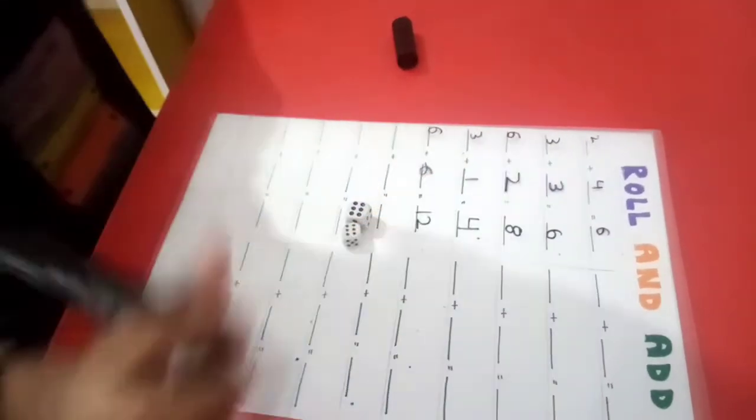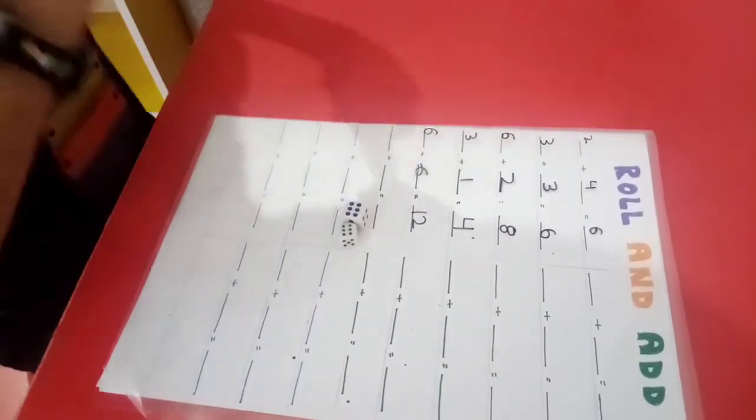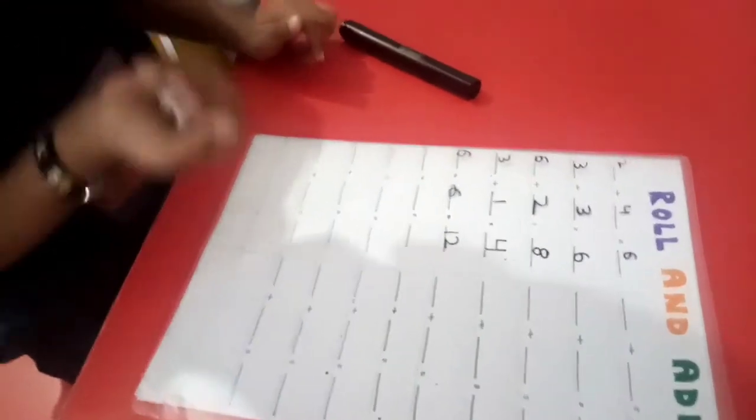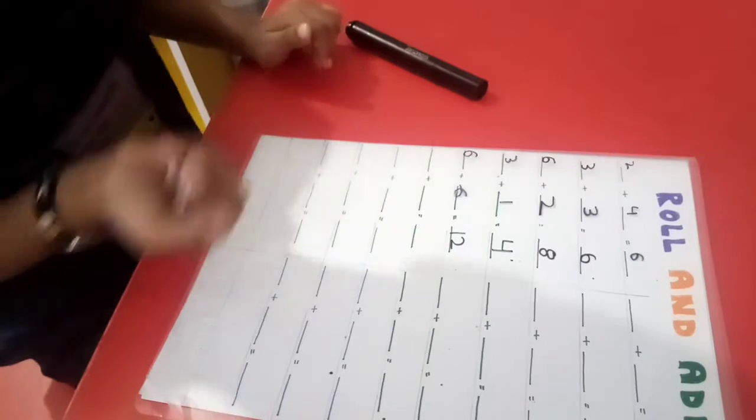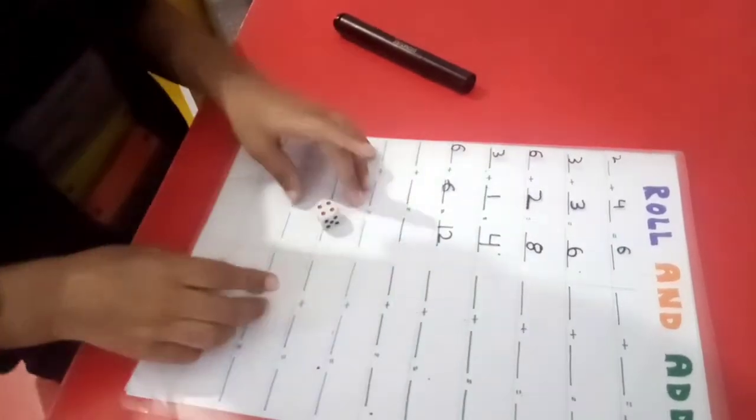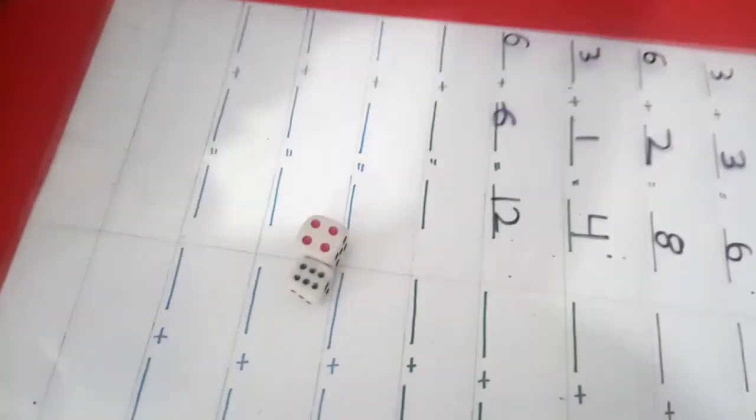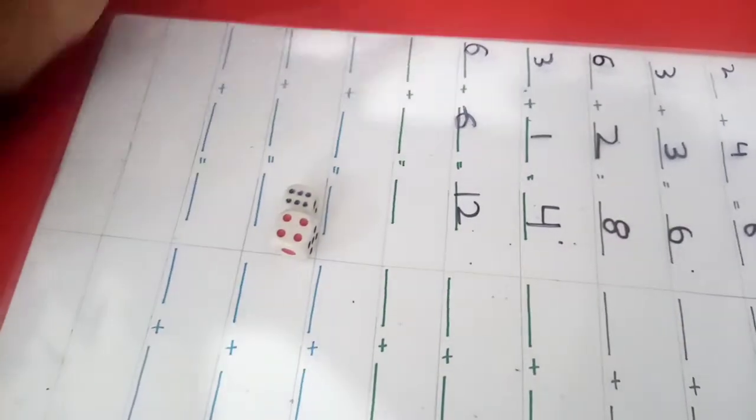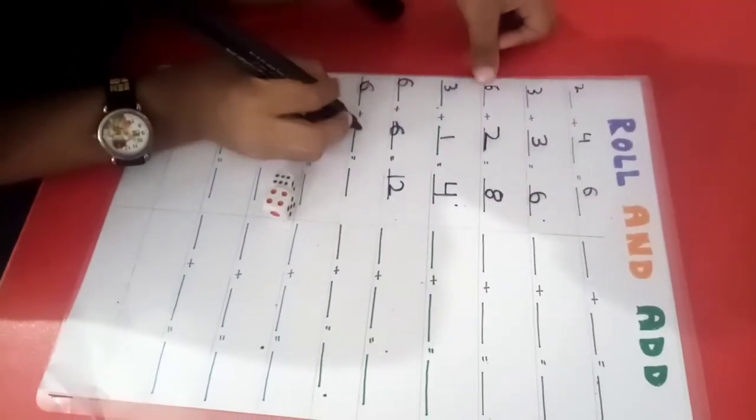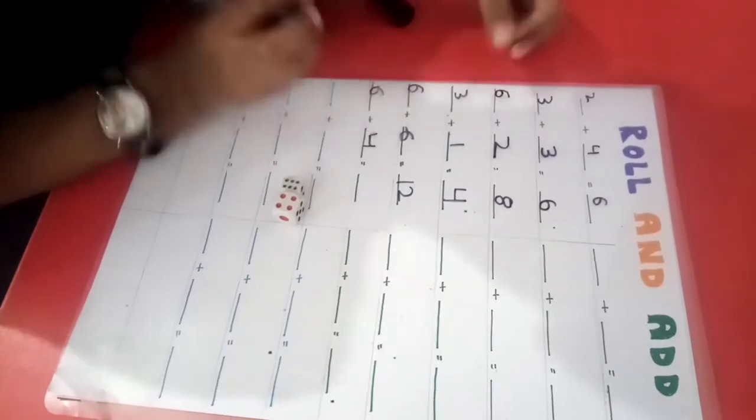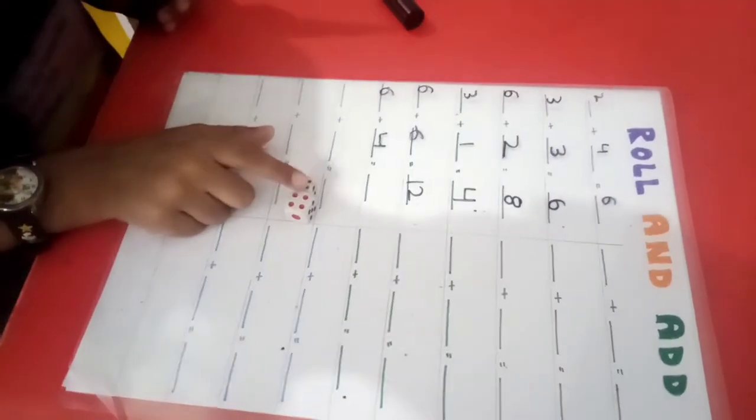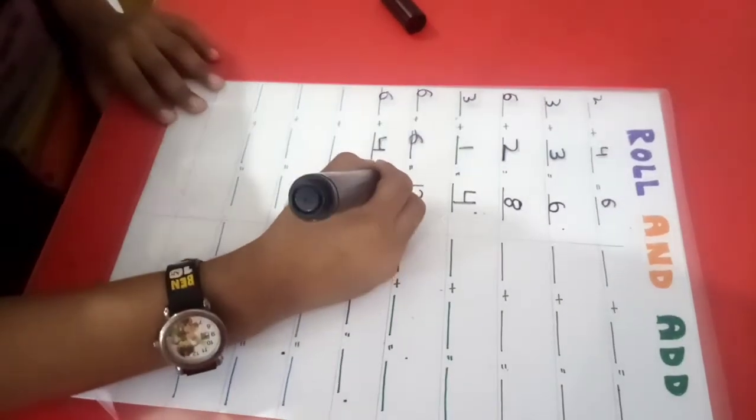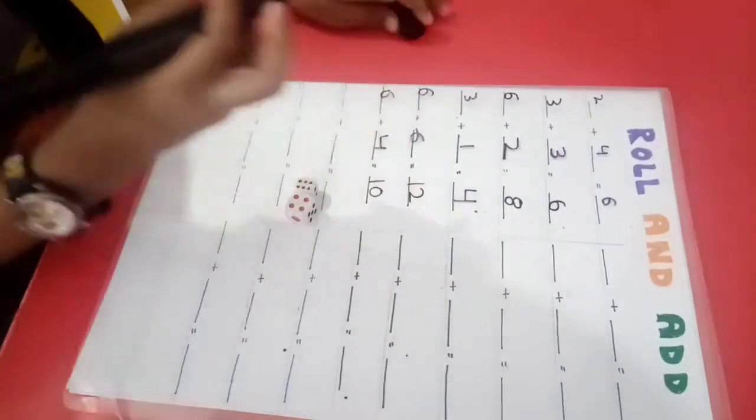Now roll the dice again. And then what comes? 6 and 4. 6 and 4. 6 and 4. Back on the total. 1, 2, 3, 4, 5, 6, 7, 9, 10. Good job. Do it again.